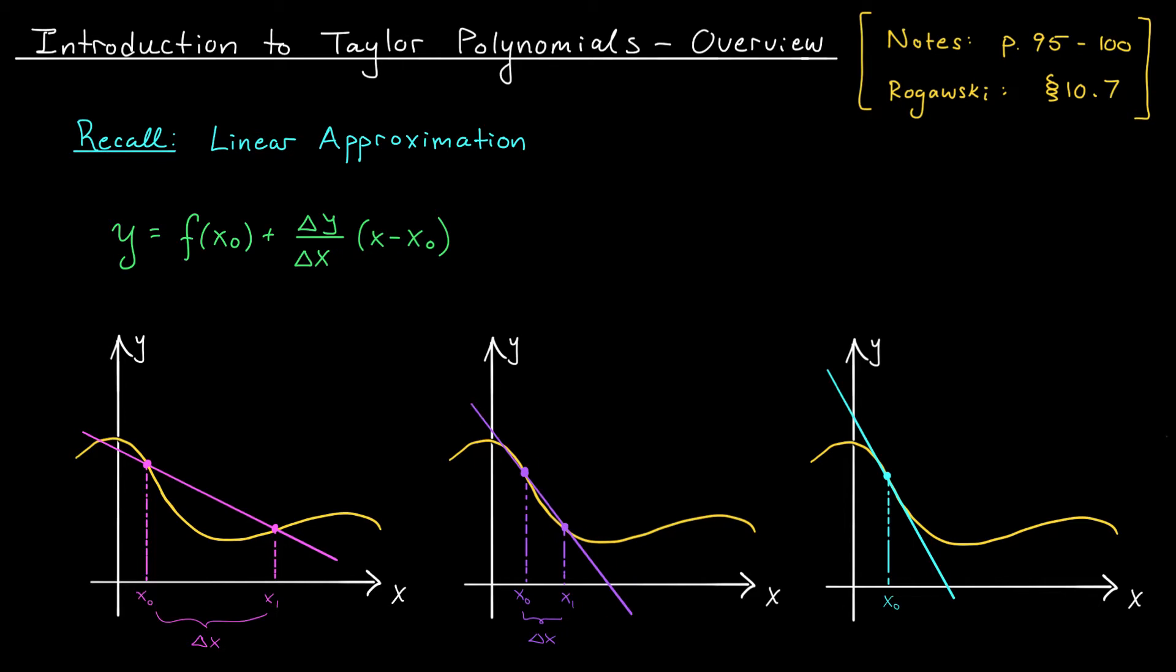When we do that, our secant line becomes a better and better approximation for the function's behavior at x_0. As we let Δx go all the way to 0, this secant line turns into a tangent line.